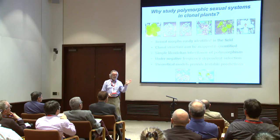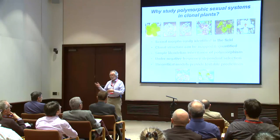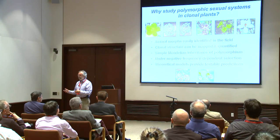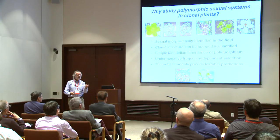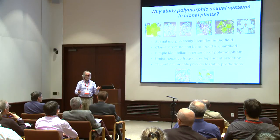What we have with enantiostyly are left-handed and right-handed flowers that essentially cross-pollinate one another because pollen is deposited either on the right-hand side or left side of the bee's body. It's a single locus two-allele system — right is dominant to left. It has evolved independently in a number of different families, and my lab has actively worked on the function of that polymorphism.